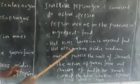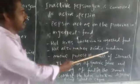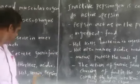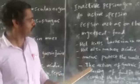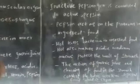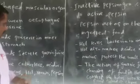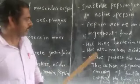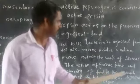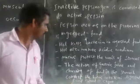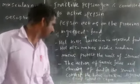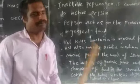The hydrochloric acid also kills the bacteria in ingested foods. Hydrochloric acid also makes an acidic medium in our stomach. Mucus protects the wall of the stomach to prevent the erosive nature of hydrochloric acid. The action of gastric juice and the churning of food in the stomach converts the bolus into semi-digested food called chyme.